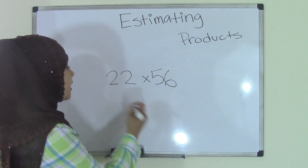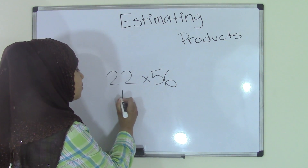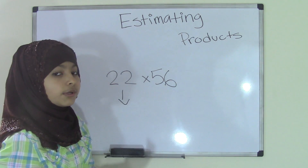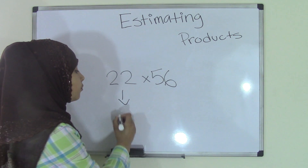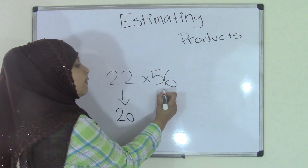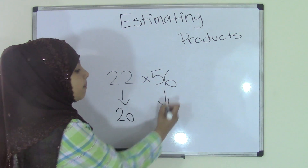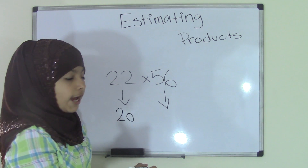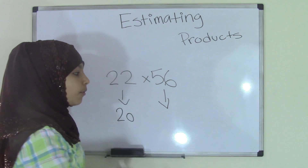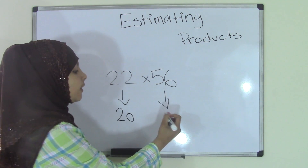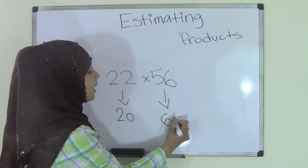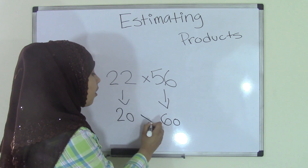So what I mean is: since 22 is less than or below 25, you will round this down to 20, which is the nearest ten. 56 is above 55, therefore you will round up to 60, which is the nearest ten.